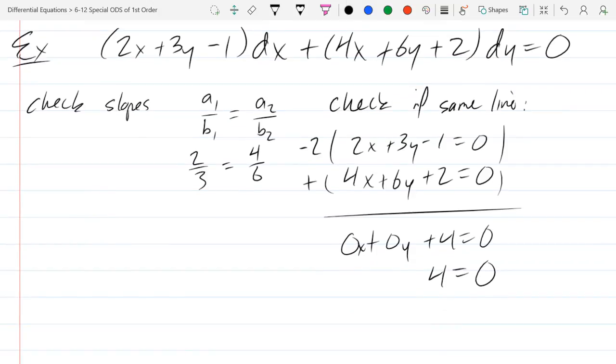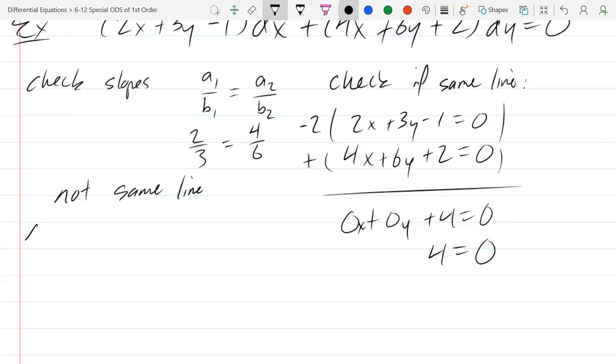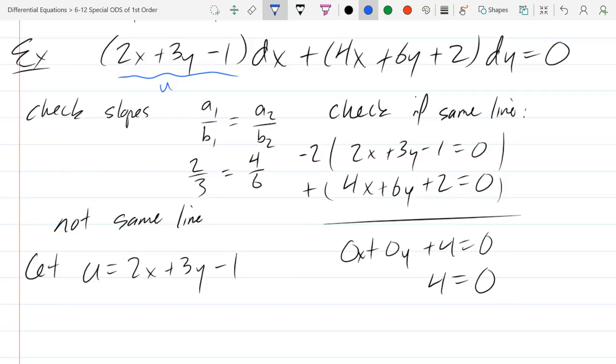All right, so they're not the same line. So let's let u equal, we'll go with the first one. So I chose this first one right here as u. This is almost u over here on the other side. Well, I should say it's almost 2u, not quite almost u, but it's almost 2u. So let's figure out how close it is to being 2u.